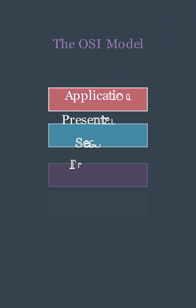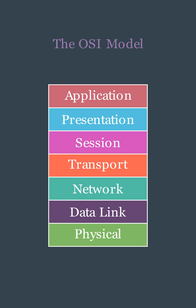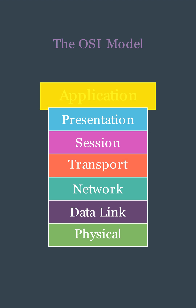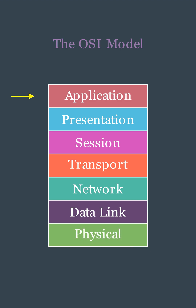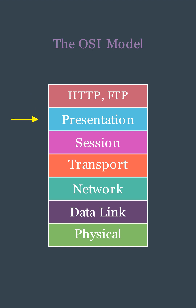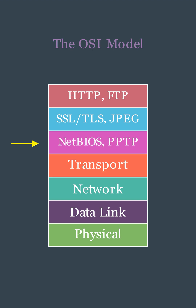The OSI model is a conceptual framework that divides network communication into seven distinct layers. These layers, from the user-facing application layer to the hardware-centric physical layer, work together to ensure seamless data transfer. The application layer is the layer closest to the user, where applications like email and web browsers interact. The presentation layer translates data formats so different systems can understand each other. The session layer manages connections between applications, keeping track of who's talking to whom. The transport layer ensures reliable data delivery by breaking data into smaller packets and reassembling them on the other end.